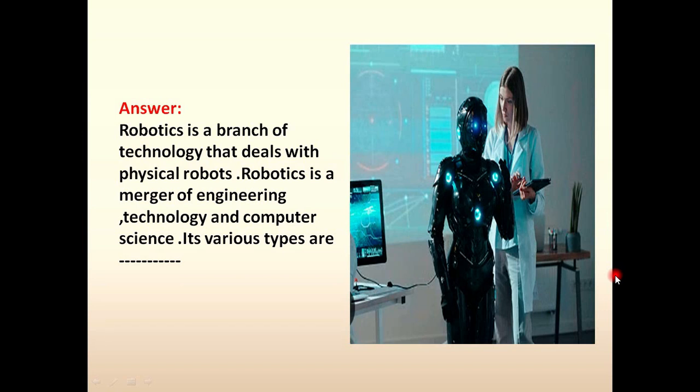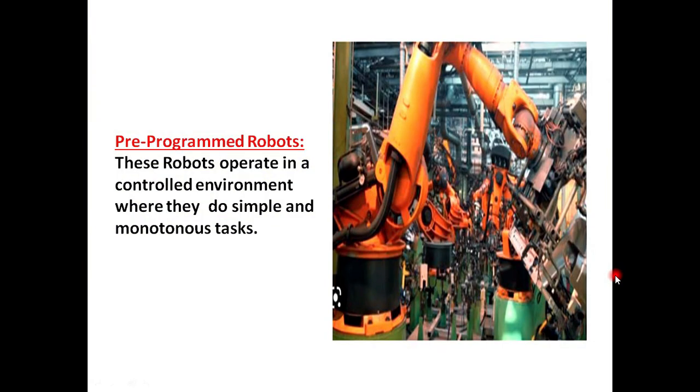Like in all fields you can see the function of the robots and the purpose of the robots. All the fields are trying to convert their manpower to the robots. First robot is a pre-programmed robot. These robots operate in a controlled environment where they do simple and monotonous tasks. You can see here the robot which is used to assemble the heavy parts of the vehicle.